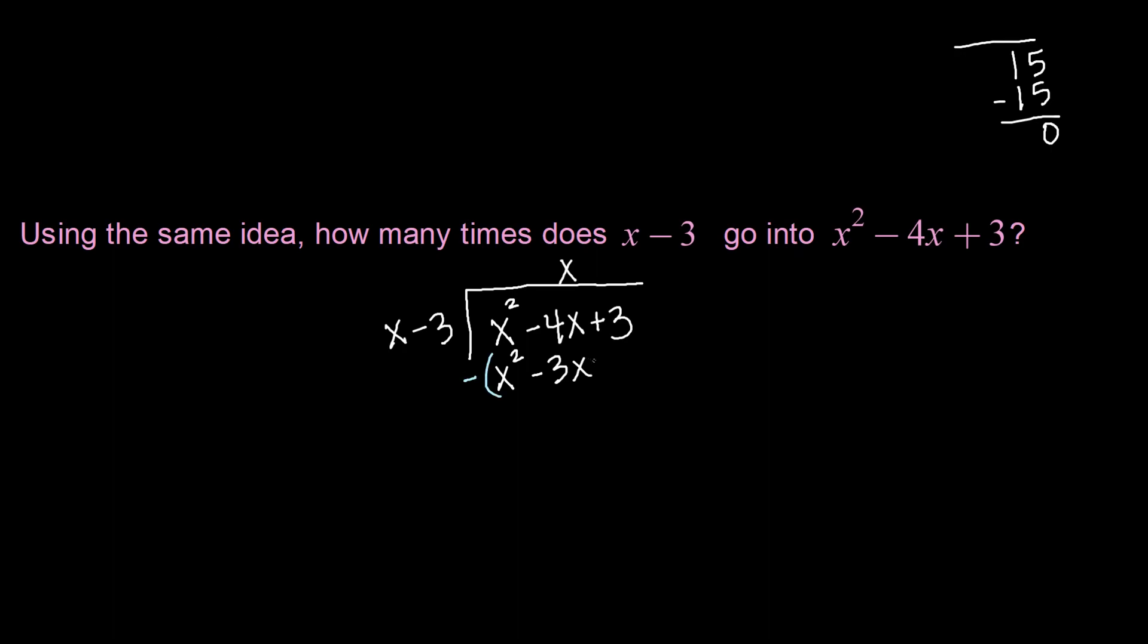Now we want to subtract that entire polynomial there. So x squared minus x squared, that zeroes out. And negative 4x minus negative 3x is negative x. So negative 4 minus negative 3 is like negative 4 plus 3, which is negative 1. Just like before, we want to bring down the next term. So I'm going to bring down that plus 3 and then repeat the process.